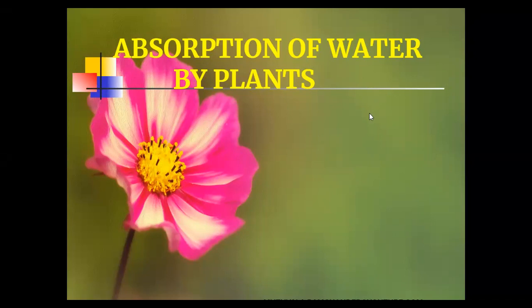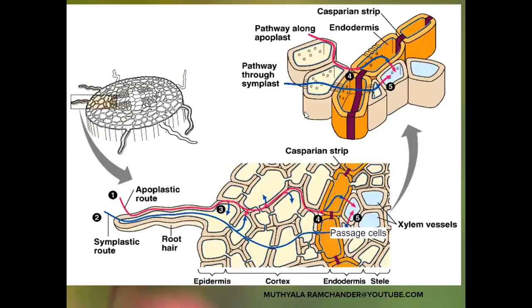By these three ways, water is absorbed by the rootlets and finally reaches the xylem by two mechanisms. One is the apoplastic route, and the second one is the symplastic route. First, let us understand the meaning of apoplast and symplast.